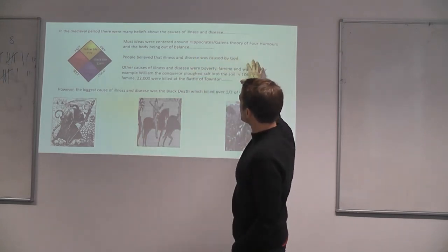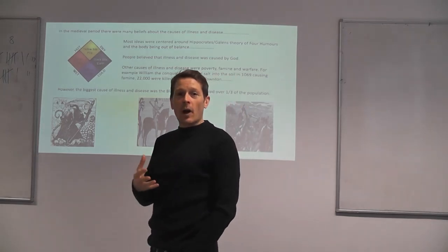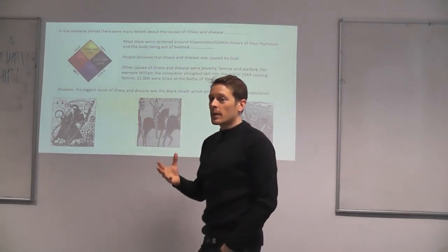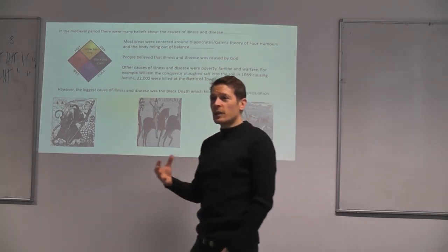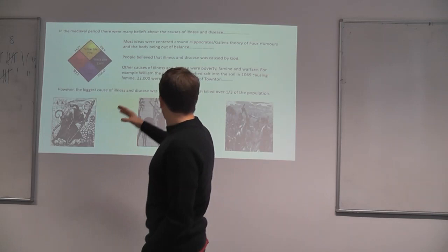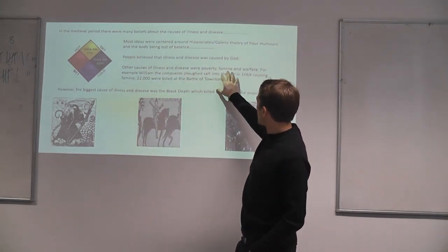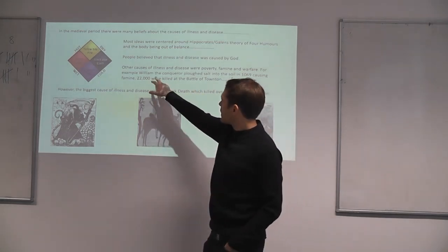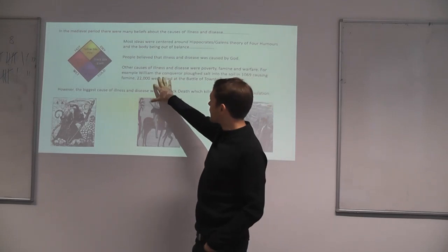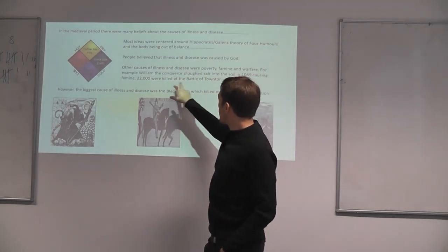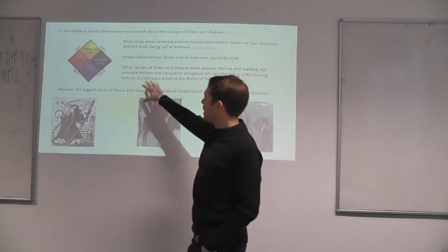What I thought is important to go in there is the idea of the four humours. Most people believe that illness was caused by an imbalance of the four humours. The idea of superstition — illness and disease are caused by superstition. Then the ones they like to hear about: poverty, famine, warfare. I put the idea about William the Conqueror ploughing salt into the soil in 1069, a nice little example causing famine. And medieval warfare causing huge amounts of deaths or illness and disease.